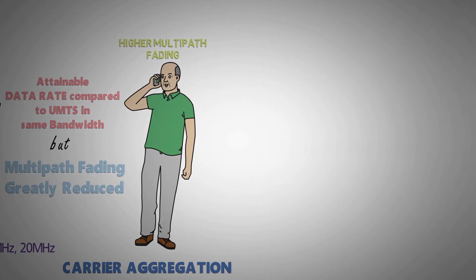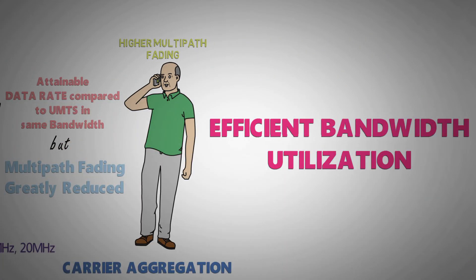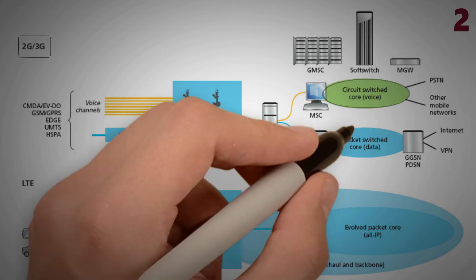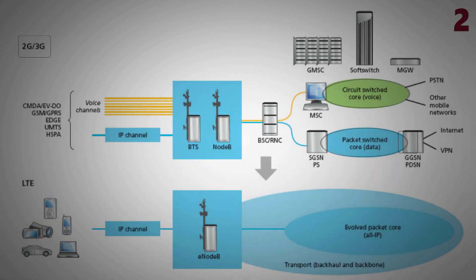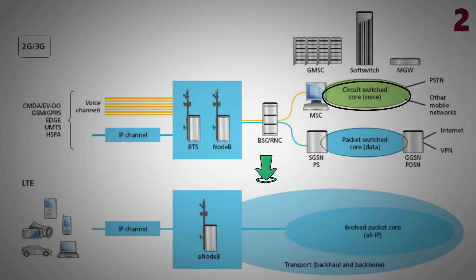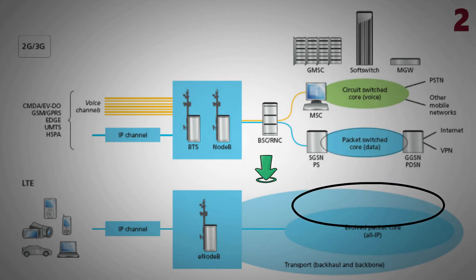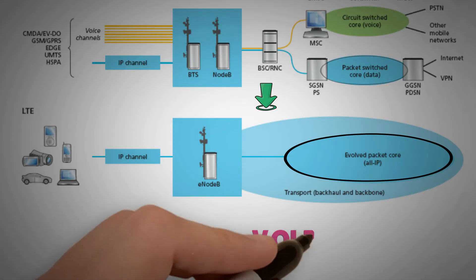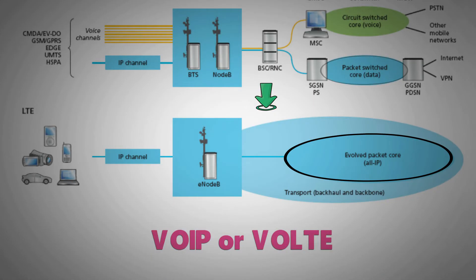2G and 3G use a traditional circuit-switched core for voice and SMS, and a packet-switched core for data, meaning operators had to maintain two core networks simultaneously. A major change in LTE was the adoption of an all IP-based core network, which means switching to VoIP — or in this case, Voice over LTE. This greatly simplifies the design and implementation of the air interface, radio network, and core.